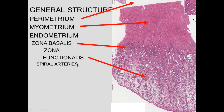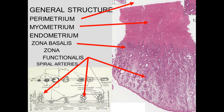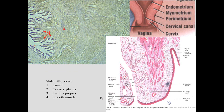The spiraling arteries also cause ischemia whenever they retract back into the basal layer. The functional layer is what sloughs off, or is the part that has secretions ready to nourish the egg — or the zygote coming in as a morula at that point in time. Then from the uterus you go to the cervix.